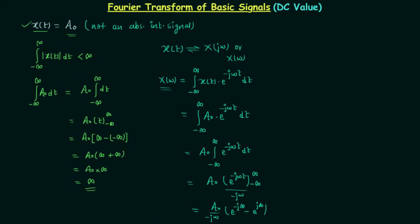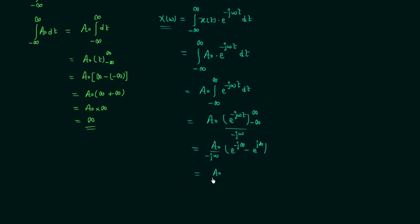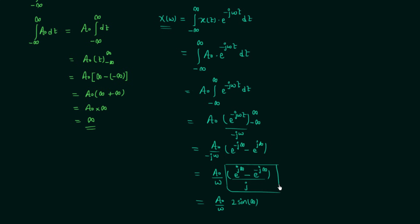Rearranging, we get A0 divided by ω, with a negative sign taken inside the bracket, giving e to the power jω infinity minus e to the power minus jω infinity. This simplifies to A0 over ω multiplied by 2 times sin(infinity). Since sin(infinity) is not defined — we don't know its value — the Fourier transform X(ω) is also undefined. So we cannot use this formula for signals that are not absolutely integrable.